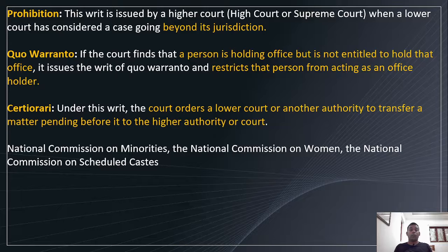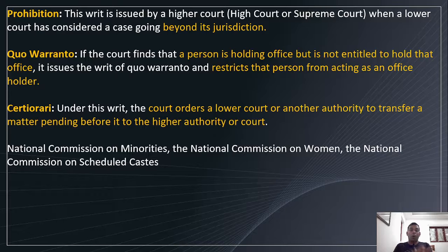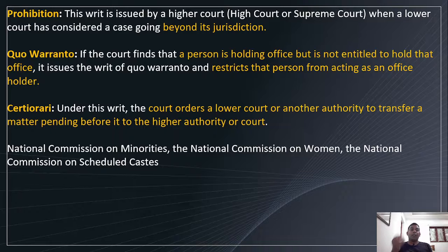Next is Prohibition. This writ is issued by the High Court or Supreme Court when a lower court has considered a case going beyond its jurisdiction. 'Prohibition' means to forbid — it prohibits the lower court from taking up a case that is not meant for that court, i.e., that is beyond its jurisdiction.